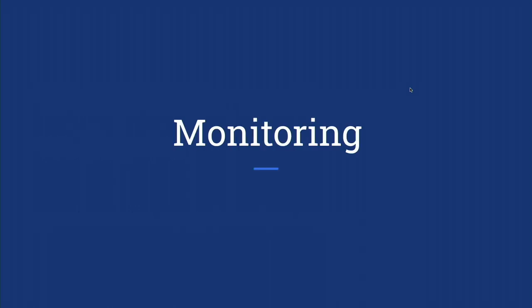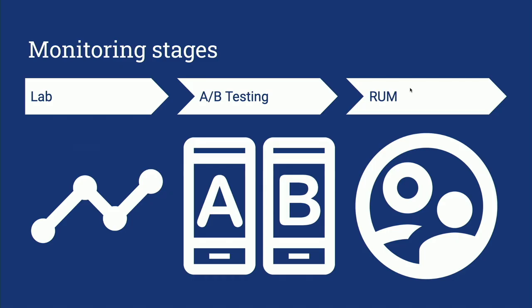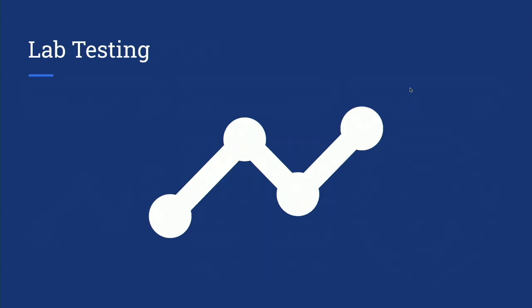With that, I'd like to switch on to monitoring. We have metrics, but we need to actually monitor them both in the lab and in the wild to make sure performance doesn't regress — otherwise, why do you have metrics? I see monitoring as a stage: you go into the lab, then you do A/B testing, and then you do real user monitoring. So let's start with the lab — performance benchmarks that you either run locally or on continuous integration.